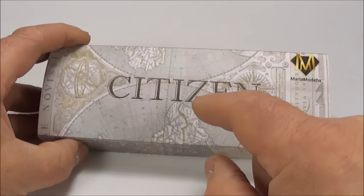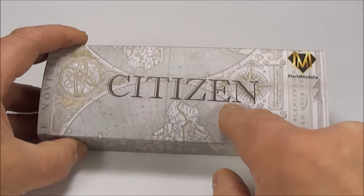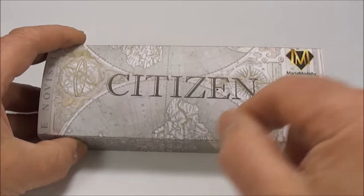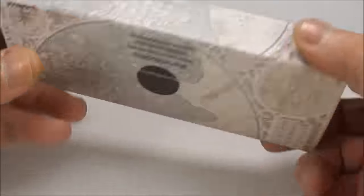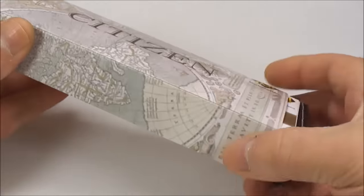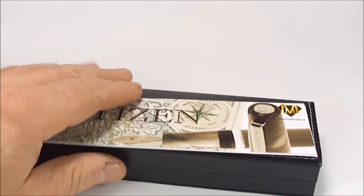What we've got here is a Marte Modena Citizen range, and this particular model is the London which we'll show you in a moment. It comes in this outer case with the company details on the back. Let's take the outer case off.